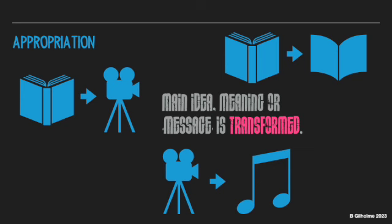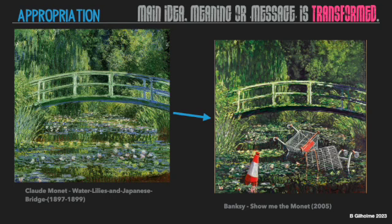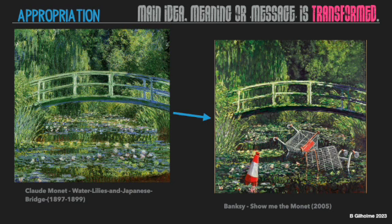Let's look at some examples in art, because appropriation is often much better understood when you look at works by people like Banksy. On the left is Claude Monet's Water Lilies and Japanese Bridge, which is really about expressing the individual's own experience. Banksy, on the other hand, isn't trying to re-communicate what Monet was communicating — he's making his own comment on contemporary society, using Monet's painting as a vehicle. He's basically stolen Monet's artwork and used it for his own purpose.